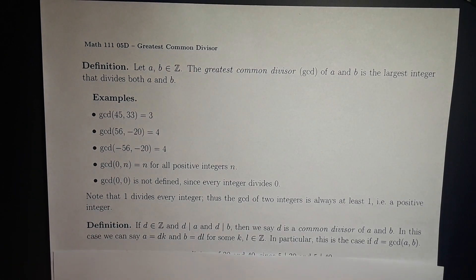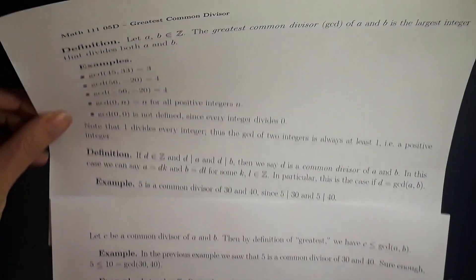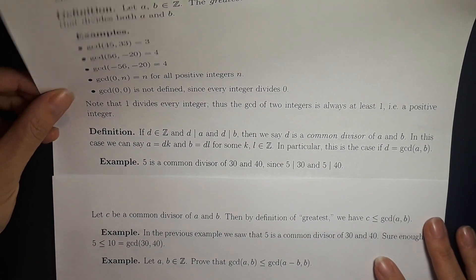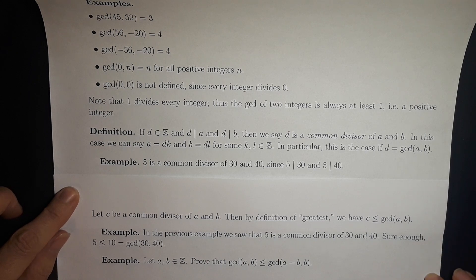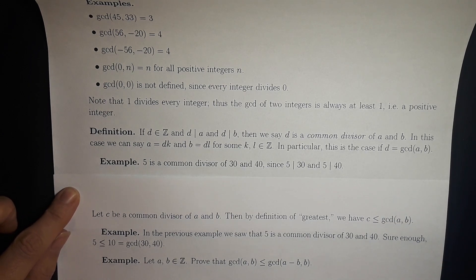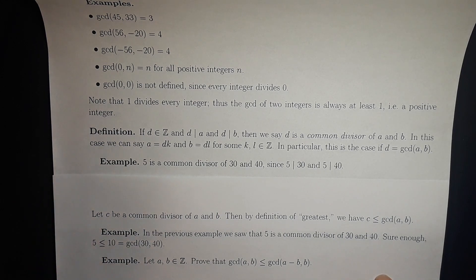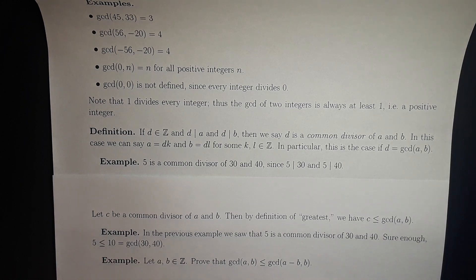One thing to note is that if c is a common divisor of a and b, then by definition of greatest, we know that c is less than or equal to the GCD of a and b. This is a handy fact when proving things about GCD. In the previous example, 5 is a common divisor of 30 and 40, and sure enough 5 is less than or equal to 10, which is the GCD of 30 and 40.